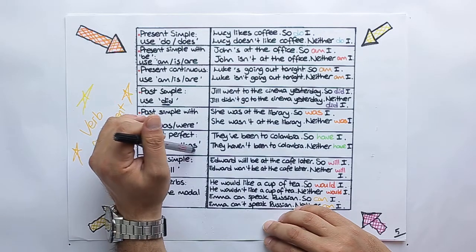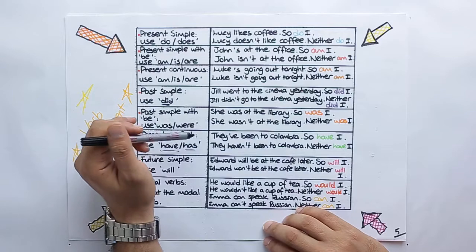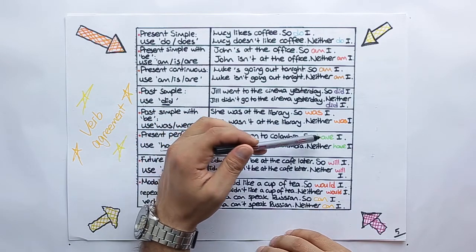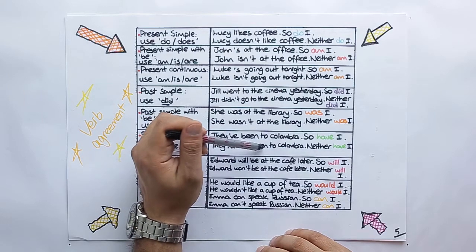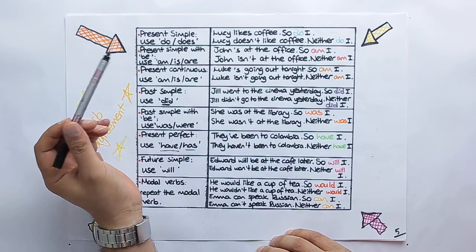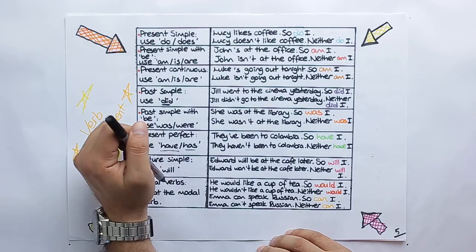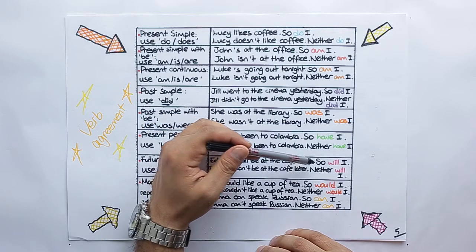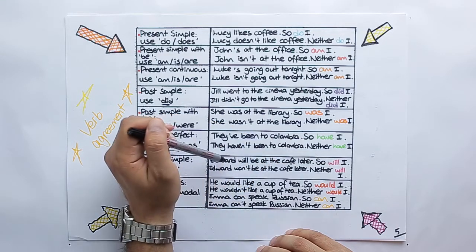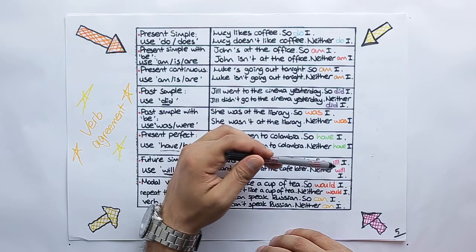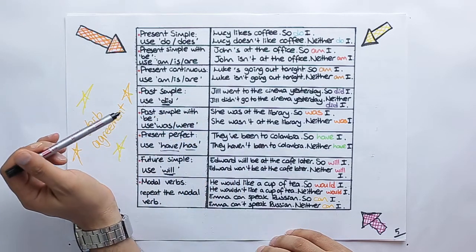They have been to Columbia, so have I. They haven't been to Columbia, neither have I. With future form, will. Edward will be at the cafe later, so will I. Or Edward won't be at the cafe later, neither will I.